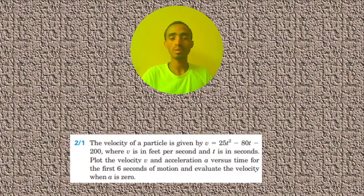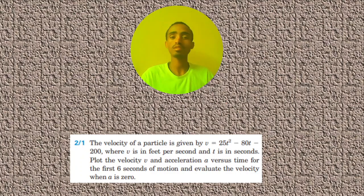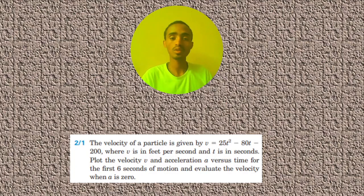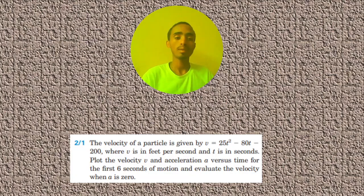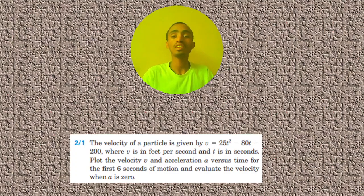This problem is about the concept of the time derivative of a vector. A vector may be acceleration, velocity, displacement, or other quantities. The time derivatives of vectors are a very important concept in this chapter, so we must use differentiation and integration. In this problem, the velocity of the particle is given by v = 25t² − 18t − 200, where v is in feet per second and t is in seconds. We are asked to plot the velocity versus time graph and the acceleration versus time graph for the first six seconds, and to evaluate the velocity when the acceleration is zero.